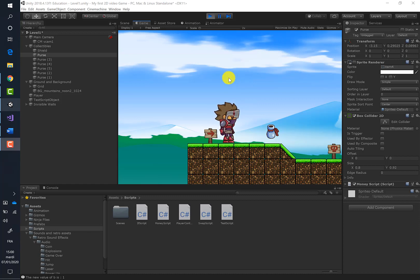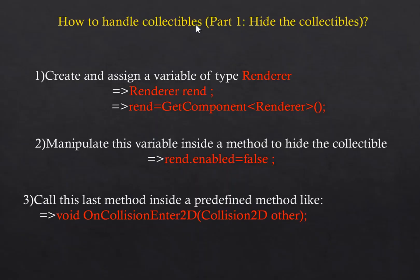To summarize hiding a collectible: first, create and assign a variable of type Renderer using two lines of code. Second, manipulate this variable inside a method by writing `rend.enabled = false` to hide the collectible. Third, call this method inside a predefined method like `OnCollisionEnter2D`. The `other` parameter refers to the tag of the game object that collides with the purse.